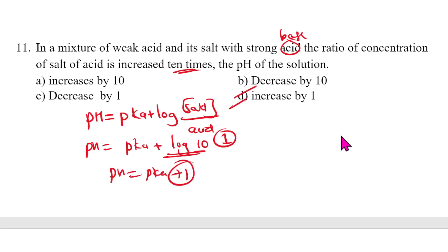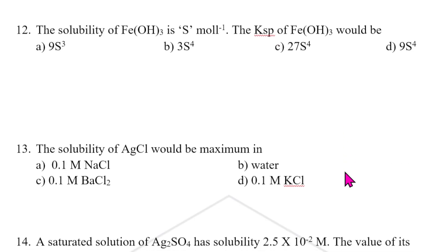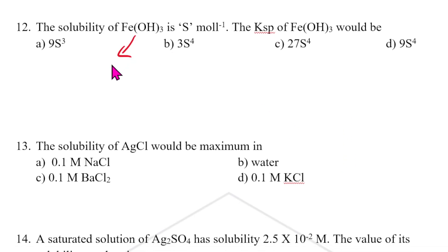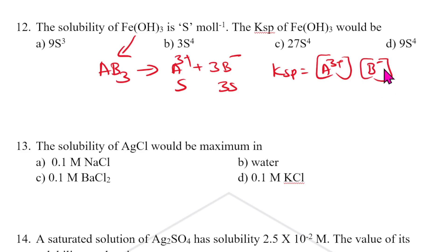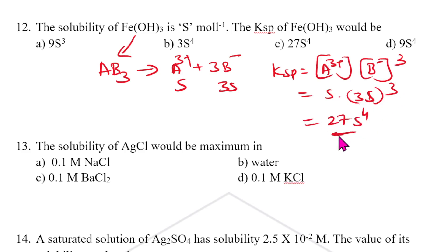Twelfth question: solubility of an AB3 type salt. If solubility is s, then A³⁺ = s and B⁻ = 3s. So Ksp = [A³⁺][B⁻]³ = s × (3s)³ = 27s⁴. The answer is C.